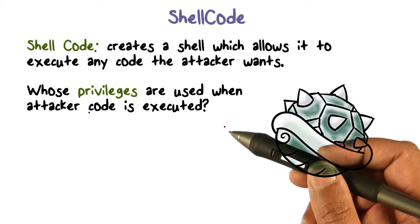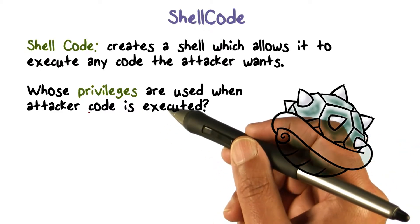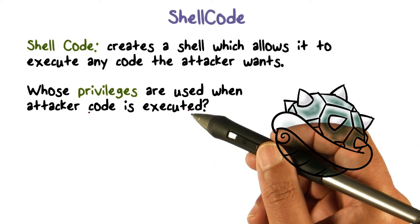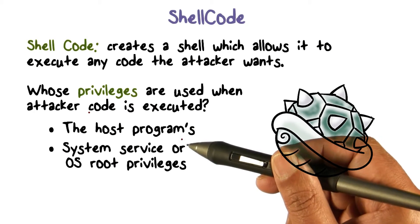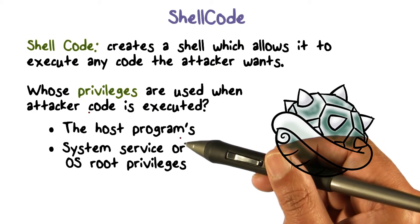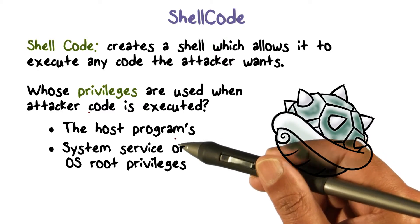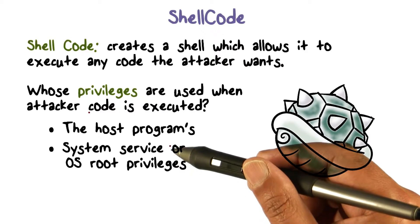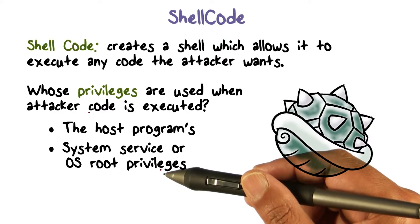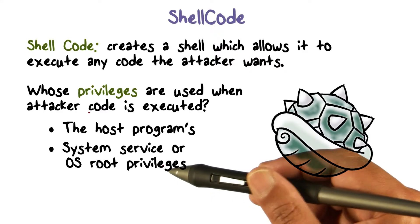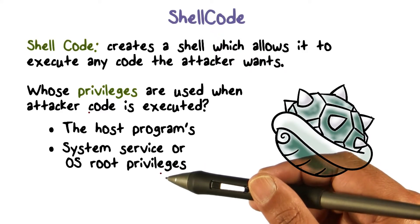This program is now executing the instructions that make up the shellcode. So whose privileges are we going to be using? These privileges are going to be the privileges that the host program — the program that gets exploited — was running with. This attacker code now has the same privileges that the target program had. So if this happened to be a system service running with root privileges, essentially you have keys to the kingdom. You can access arbitrary resources.